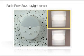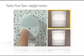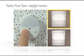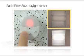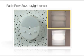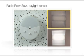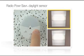To adjust grouping for a Radio PowerSaver Daylight Sensor, first press and hold the LINK button on the Daylight Sensor you want to group for 6 seconds. A single fixture will begin to flash. If that fixture should not be controlled by the Daylight Sensor you're working with, tap CAL to remove it.